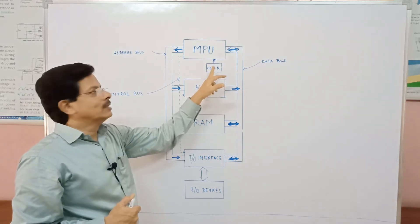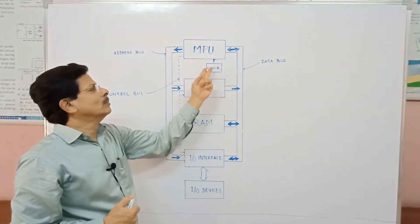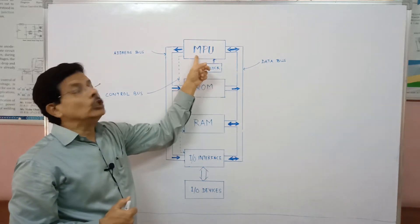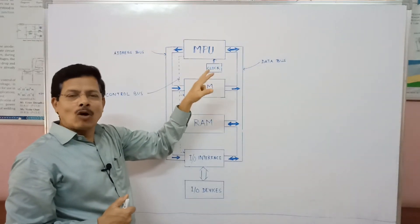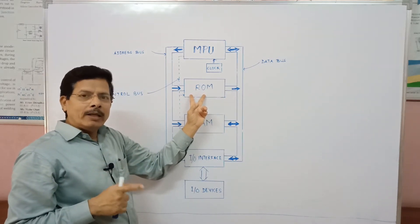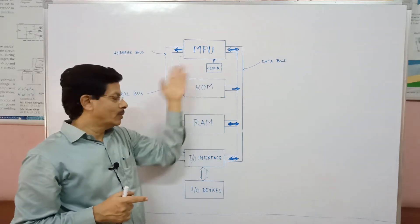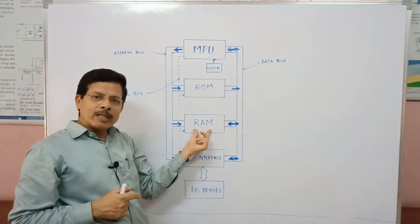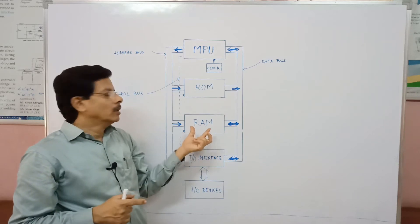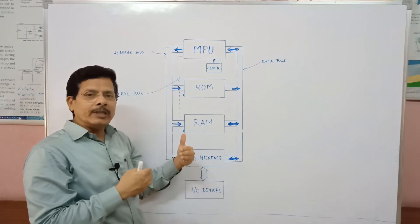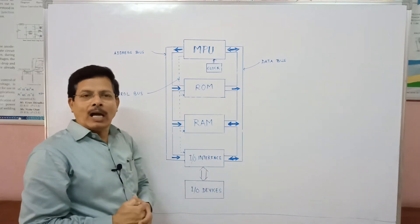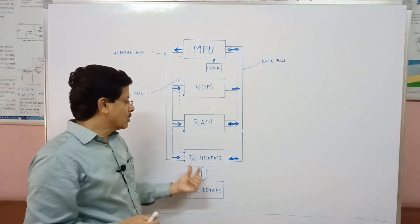Let us consider the function of all blocks. We have the clock — this is just a crystal or some LC oscillator — this decides the frequency of the clock generator, and accordingly you get the speed of the microprocessor, providing a common time base. Then there is the ROM, which is permanent memory used to store monitor programs or the operating system of the computer. Then we have RAM, which we call internal memory. It is used as a scratch pad, and usually we store our program and data into the RAM.